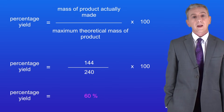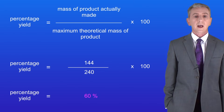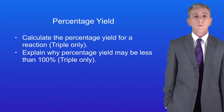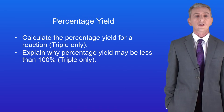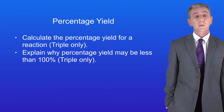Remember that you'll find plenty more questions on calculating percentage yield in my revision workbook, which you can get by clicking on the link above. Hopefully now you should be able to calculate the percentage yield for a reaction and explain why the percentage yield may be less than a hundred percent.